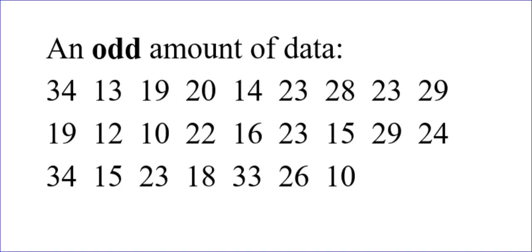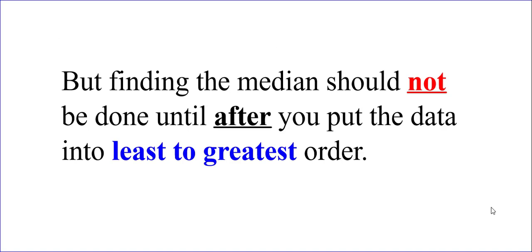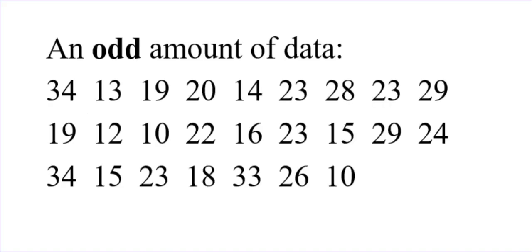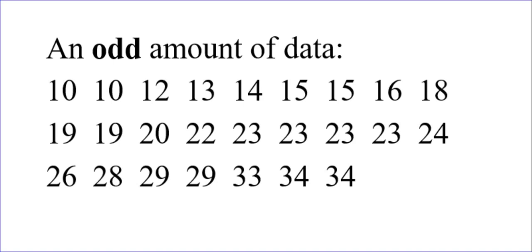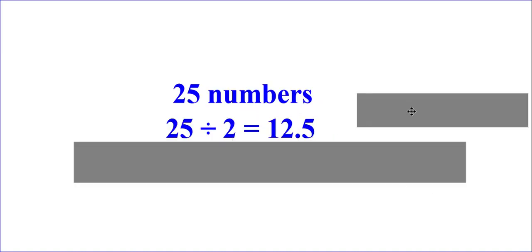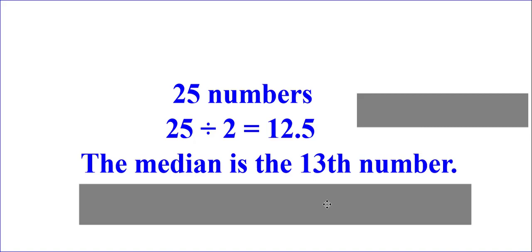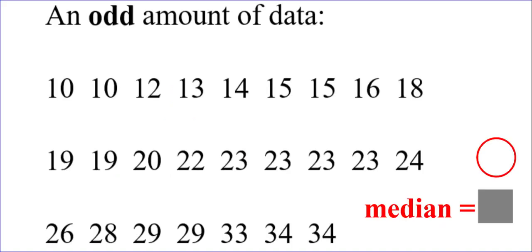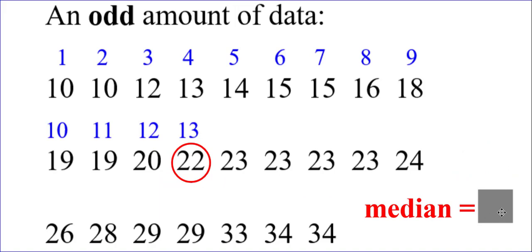However, did you notice these numbers are not in least to greatest order? You have to make sure that you're not finding the median until after you put the numbers in least to greatest order. So, abracadabra, boom, all right, they're in least to greatest order. Wouldn't it be nice if it was that simple in real life? There are 25 numbers. So what we're going to do, we're going to take 25 divided by two, just like I was doing the last time. That gives me 12.5. Now, there is no such thing as a 12.5 number. So round that up. That means the median will be the 13th number. Okay, so let's start counting. 1, 2, 3, 4, 5, 6, 7, 8, 9, 10, 11, 12, 13. Ah, that's what we said was going to be right in the middle, the 13th number for this data set of 25 numbers. So, 22 is our median.